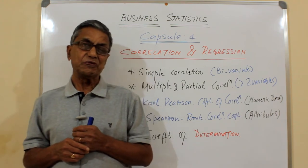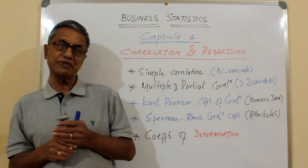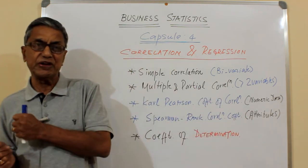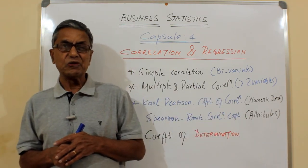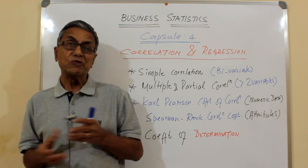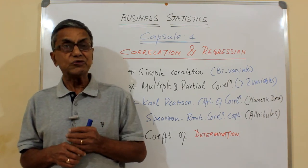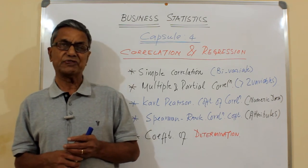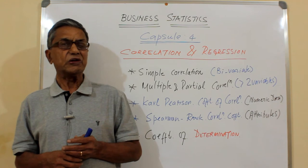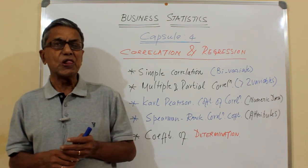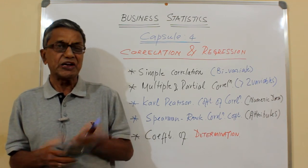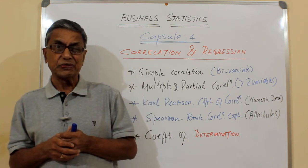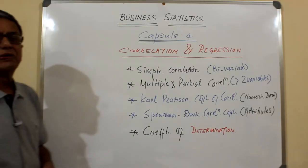When one variable varies, understanding how it impacts the other variable gives us very useful information. With the help of such information we can make very useful decisions. As a matter of fact, correlation is extensively used in several walks of life, and in almost everything the first question that arises is: does it correlate or does it show any relationship?